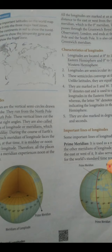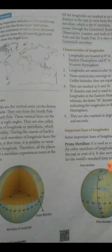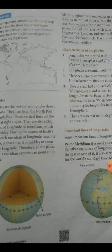During the course of the earth's rotation, each meridian of longitude faces the sun. Thus at that time, it is midday or noon along that longitude. Therefore, all the places located on the meridian experience noon at the same time.